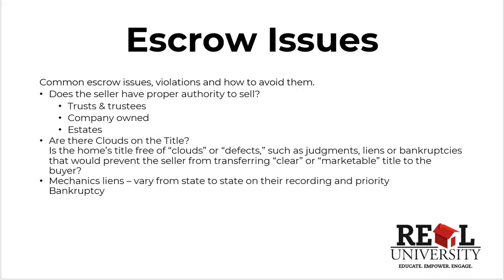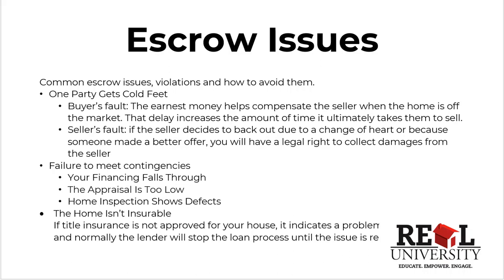One of the other things that could pop up are clouds or defects. Is there a judgment listed against the seller or potentially the buyer? Are there any bankruptcies the seller has gone through or is going through? They need to make sure the seller can actually give clear — what they call marketable — title. Clouds can be issues, and most of those can be solved in advance. Mechanics liens can be an issue; they show up as liens. The best way is to get all of this through the preliminary title work to see what's going on.